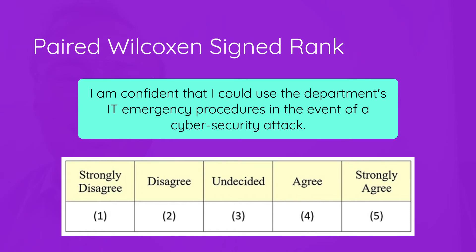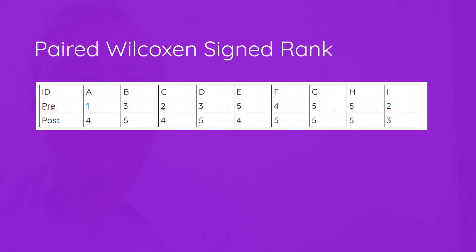She poses the same question: 'I am confident that I could use the department's IT emergency procedures in the event of a cybersecurity attack.' Participants rate it from 1 to 5 — once before and once after taking the training course. Looking at the data table — participants A through I, the nine participants — we can see their pre-course and post-course answers. In most cases, it looks like there was an increase in confidence after the course.